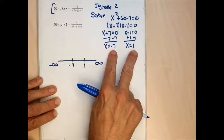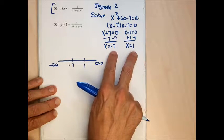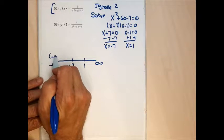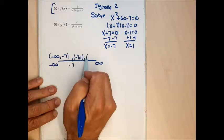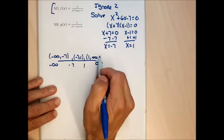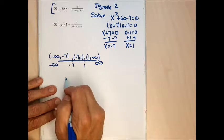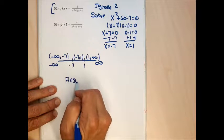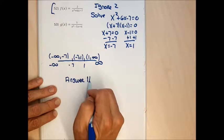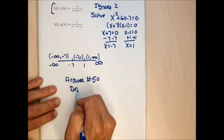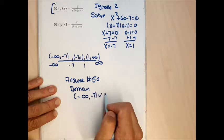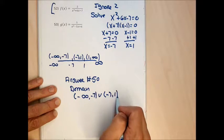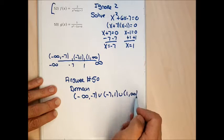I take those two numbers and put them on a number line with negative and positive infinity to create intervals. I always get one more interval than the number of excluded values. With two excluded numbers I get three intervals: (-∞, -7), (-7, 1), and (1, ∞), all with round brackets. The domain for problem 52 is those three intervals separated by union symbols.